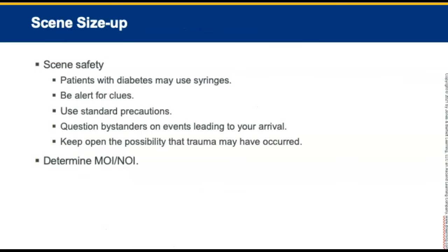For patient assessment of diabetes, start with the scene size-up. Be careful of the presence of syringes used by patients with diabetes for insulin. Be alert for clues such as syringes, insulin bottles, or food and orange juice that may help determine what is wrong with the patient. Use standard precautions. Question bystanders on events leading to your arrival and keep open the possibility that trauma may have also occurred. Determine the mechanism of injury (MOI) or nature of illness (NOI).